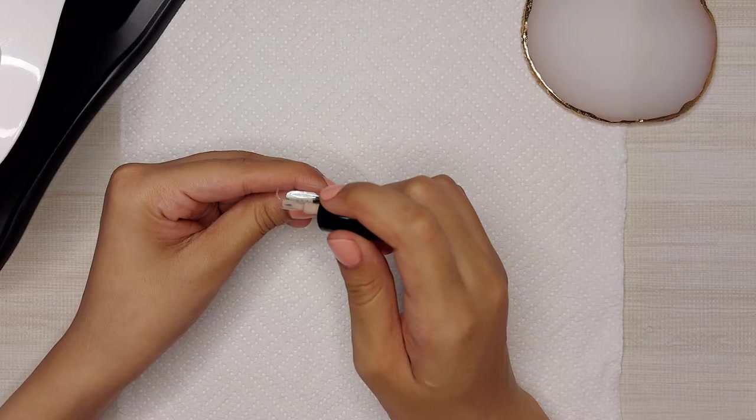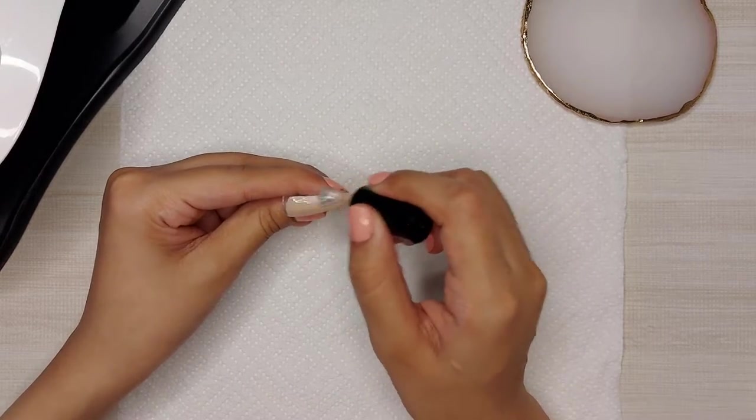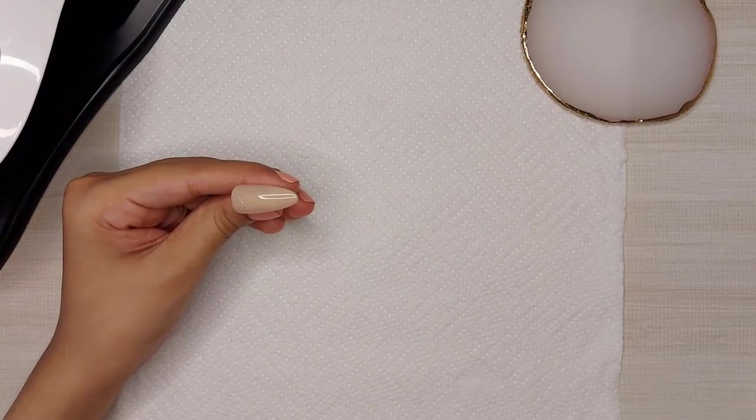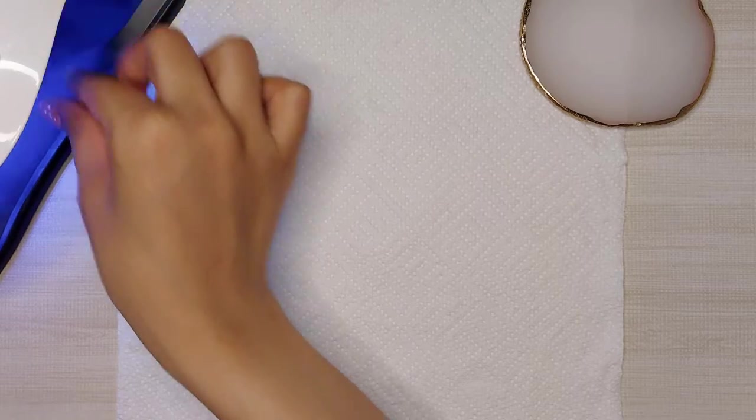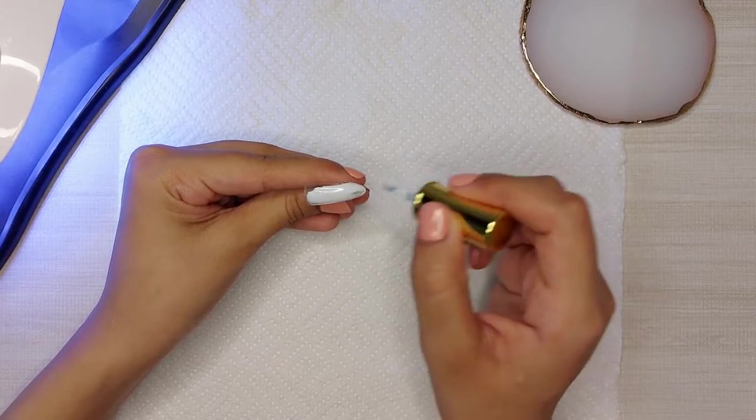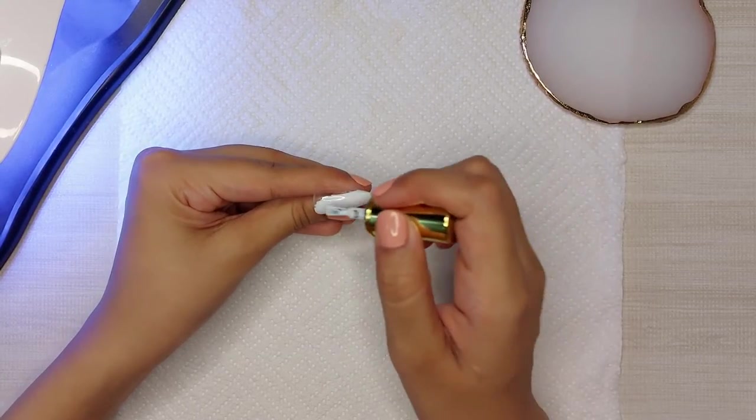So now it's time for gel application. I will apply two coats of this color - yes I think it's a beige color. I don't know, I'm really bad at naming colors. So yeah, I'll apply two coats of this color on two nails and on the third nail I'll apply two coats of this white gel polish and I'll cure each coat for 60 seconds.